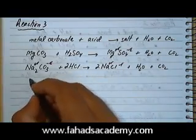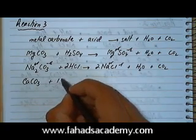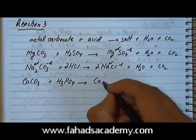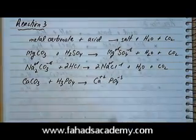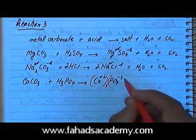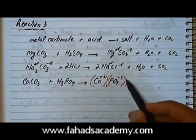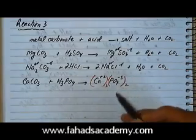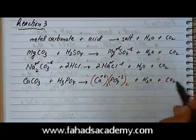Similarly, calcium carbonate: calcium has a charge of plus two and carbonate has a charge of minus two, so the charges cancel out. Reacting with phosphoric acid H₃PO₄, the salt is formed by replacing H with the calcium cation. To balance the charges, there should be three calciums and two phosphates — a simple technique is to swap the charge numbers across. This gives Ca₃(PO₄)₂ plus a water molecule and a CO₂ molecule.